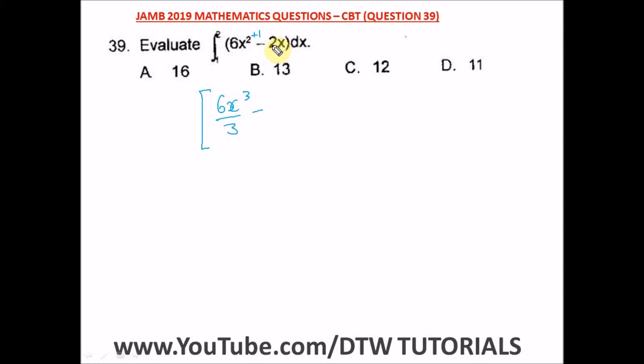For 2x we are going to add 1 to the power. This x is already carrying a 1, so we have 1 plus 1 which is 2, then we divide by 2. So we have 2x squared divided by 2.